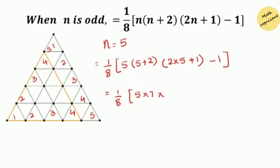Now 1 over 8, use order of operations again. 5 plus 2 equals to 7, times 2 times 5 is 10, plus 1 equals to 11. At last you need to put minus 1.